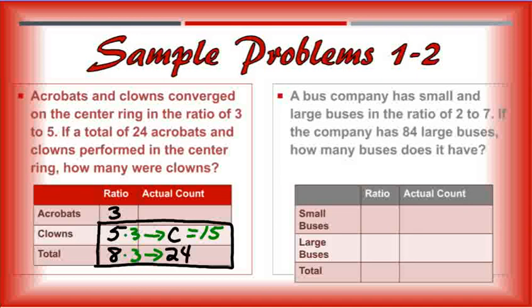The second one here, a bus company has small and large buses in the ratio of 2 to 7. So small is 2, seven is the large buses. That's a total of nine buses.